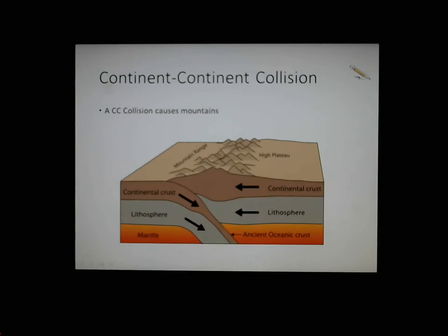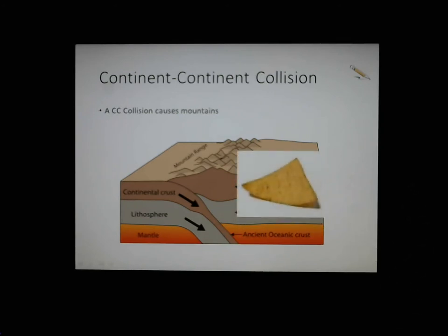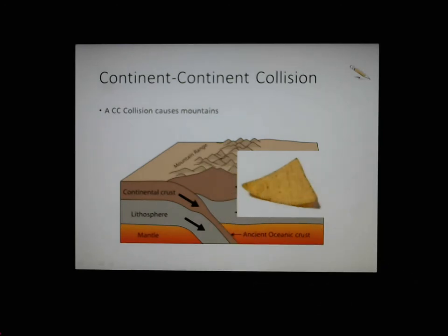Here are two continents. When they come together, one of them will get pushed under the other, subducted down into the molten part of the Earth and destroyed. A CC — continent-continent — collision causes mountains. The way I remember it: the letters CC kind of look like triangle shapes — like mountains. So CCs cause mountains. This edge gets subducted, and this bit gets pushed up.